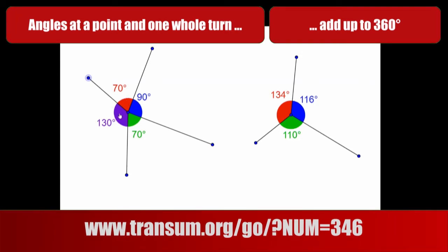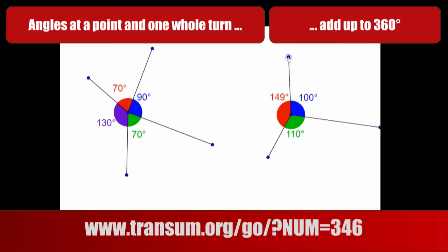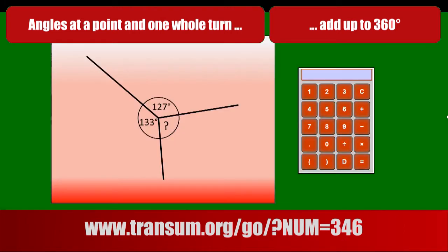Those four angles add up to 360. And the same here — we have three angles this time, but it doesn't matter where I put the arms. If you add those three numbers together, you'll get exactly 360 degrees. Now let's solve some problems.